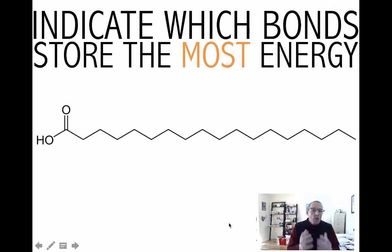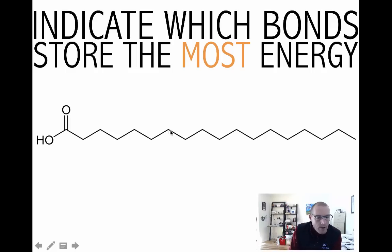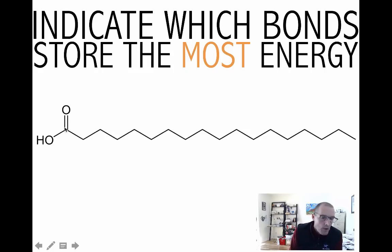Try this molecule — which bonds store the most chemical potential energy? Hopefully you identified the carbon-carbon bonds. The skeletal diagram may look unusual: remember carbon has a valence of four, so at each vertex there's a carbon. Where only two bonds are shown, there must be two additional bonds — to hydrogens not explicitly drawn. Any bond from these carbons to hydrogens contains more energy than, for example, a carbon double-bonded to oxygen, or an O-H bond.